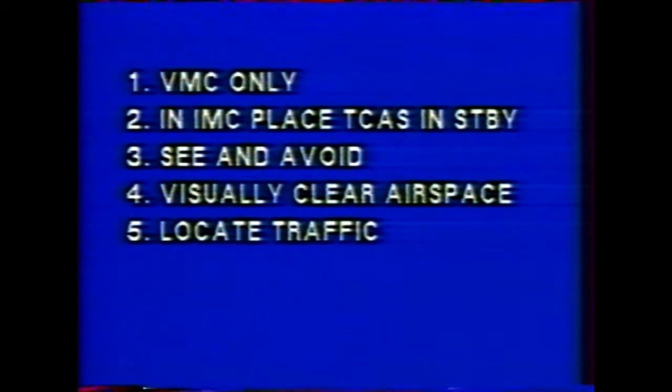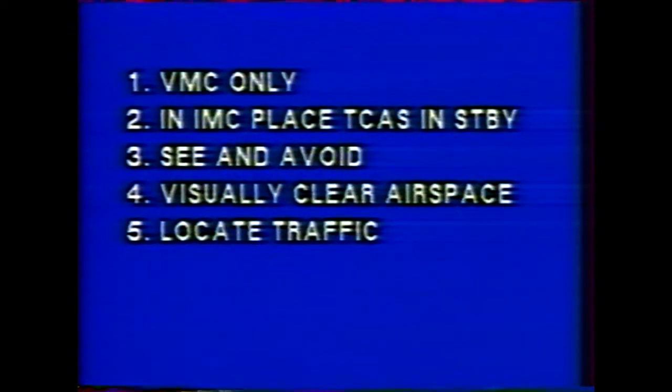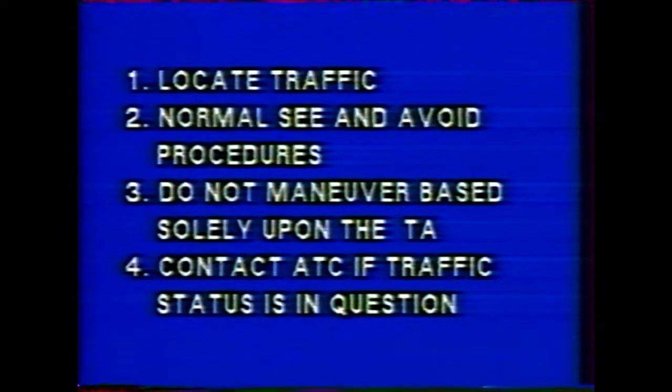Five, bearing information is not of sufficient accuracy to support horizontal maneuvers; it is intended solely to aid in locating traffic visually. In the event of a traffic advisory: one, undertake a visual search for traffic; two, with visual acquisition, respond using normal see-and-avoid procedures; three, do not maneuver based solely upon the traffic advisory; four, communicate with ATC if the traffic status is in question.